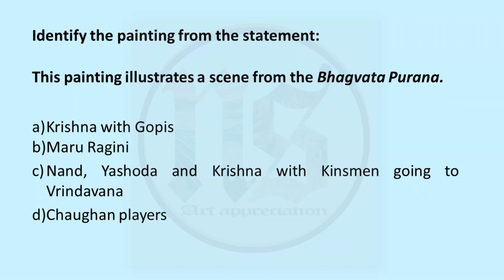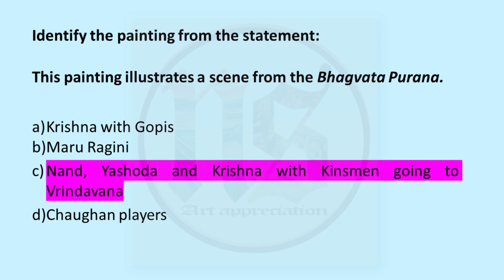Identify the painting from the statement: this painting illustrates a scene from the Bhagwat Purana. Looking at the options: Krishna with Gopis is a scene from Geet Govind written by Jai Dev; Maru Ragini is a Ragmala painting; Chogan Players is a recreational sports activity where princesses play polo with their maids. We are left with C — Nandi Yashoda and Krishna with kinsmen going to Vrindavan — because this is a scene from the Bhagwat Purana. So C is the answer.